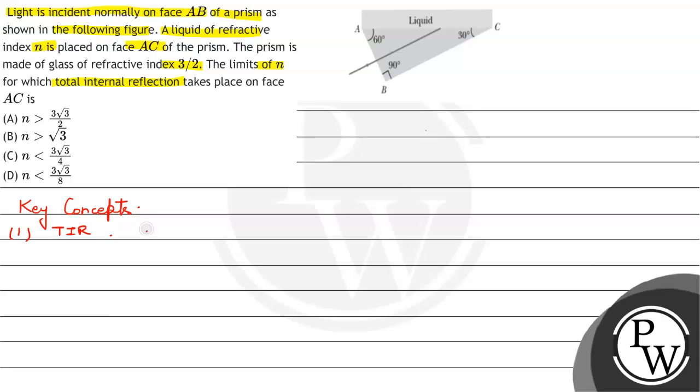It has two key concepts. For TIR to be applied, we must have the light go from denser to rarer medium. Second, theta must be greater than theta C.